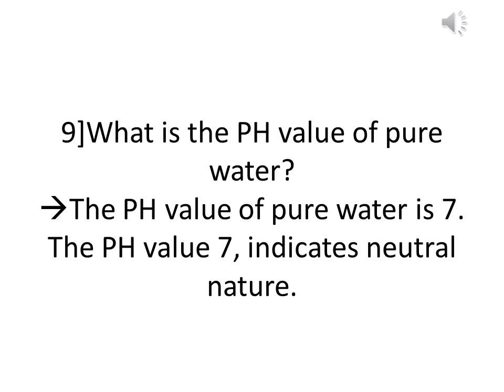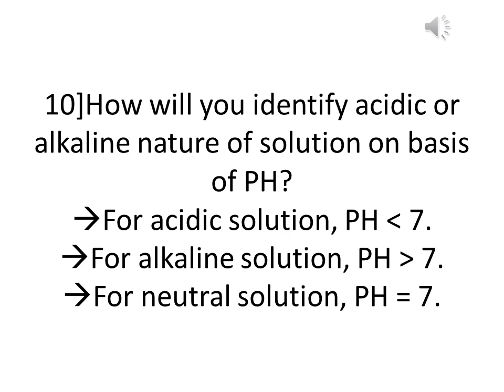What is the pH value of pure water? The pH value of pure water is 7. A pH value of 7 indicates a neutral nature.